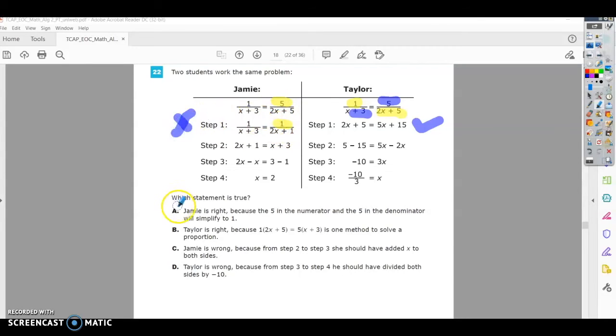Looking at the statements, let's see which is true. It says Jamie is correct because the 5 in the numerator and the 5 in the denominator will simplify to 1. So they tried to simplify the five here.